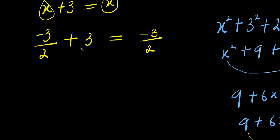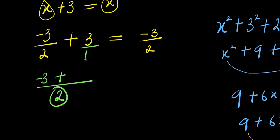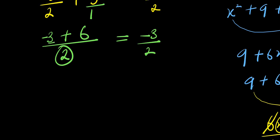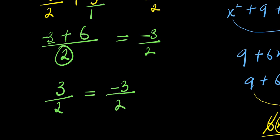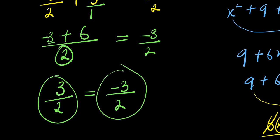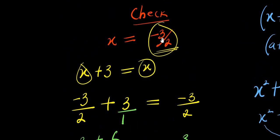So at this point, the common LCM here is 2. I will divide 2 by 2, that is 1; 1 times negative 3, we have negative 3; plus 2 divided by 1, 2 times 3, we have 6. So we have negative 3 plus 6 divided by 2, and this equals negative 3 divided by 2. So from here, I have 3 divided by 2 on the left and negative 3 divided by 2 on the right. These are not the same, so this is not equal to this. It means that this particular solution is not correct.